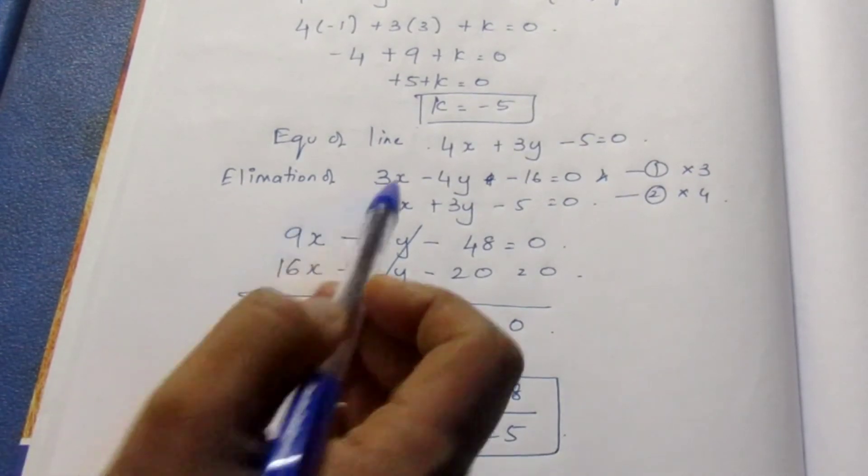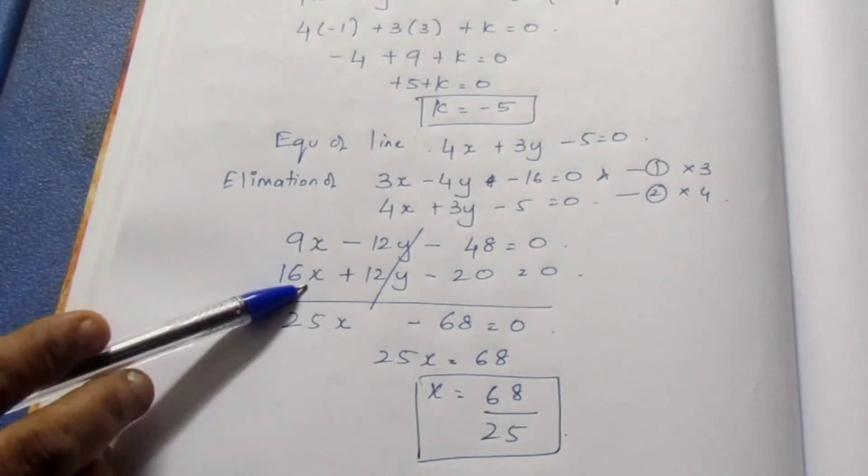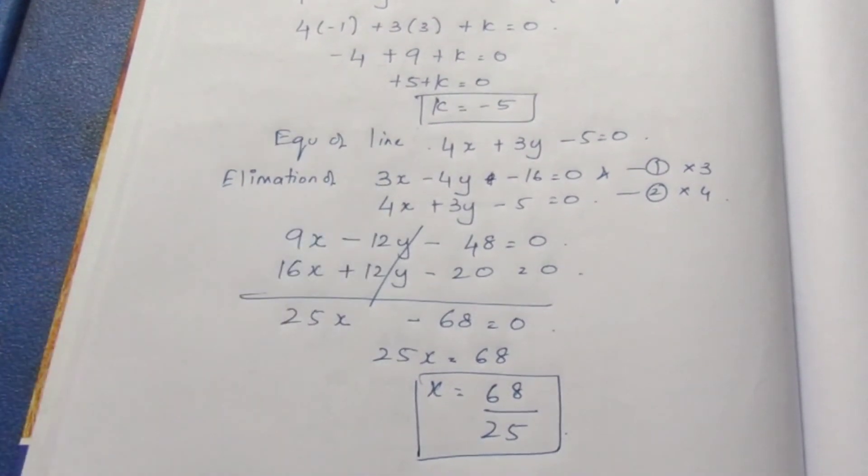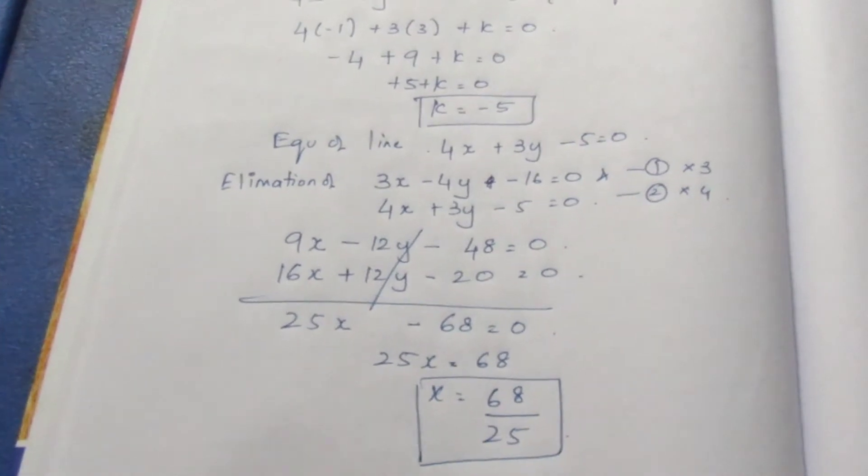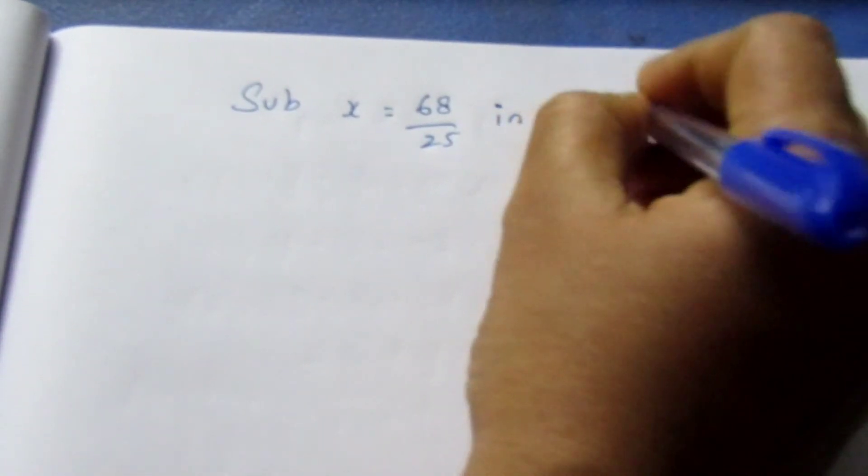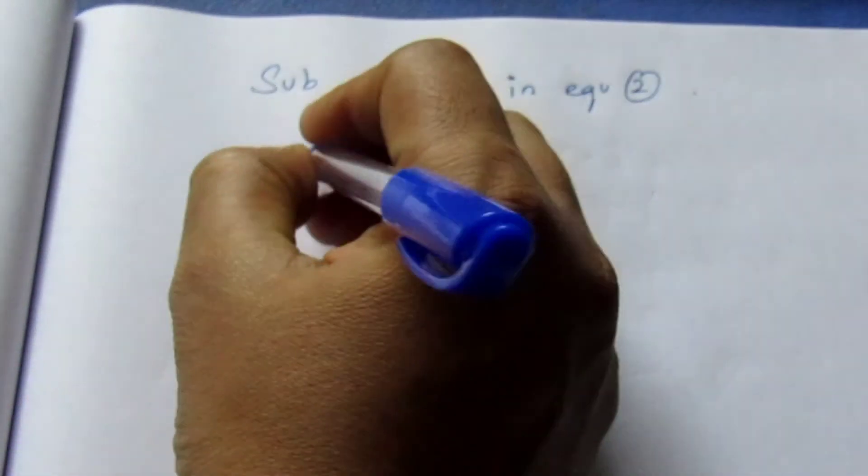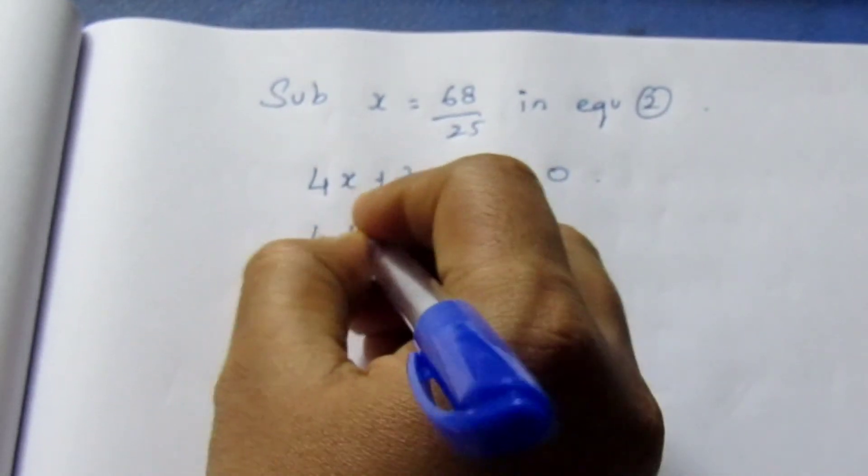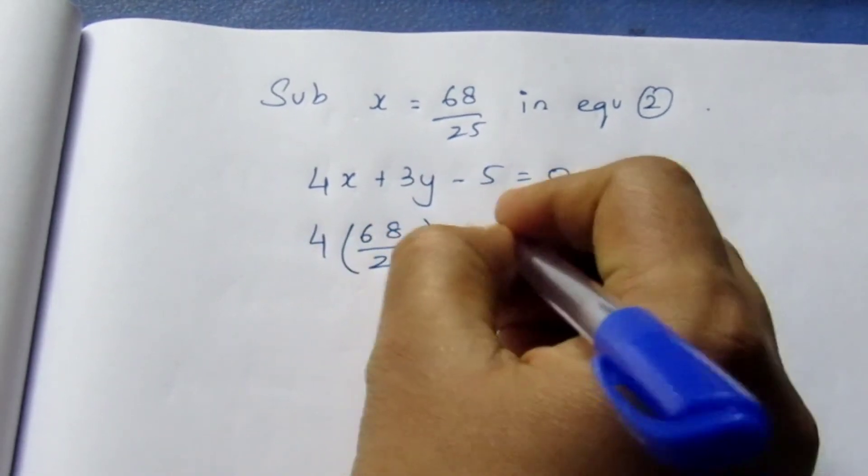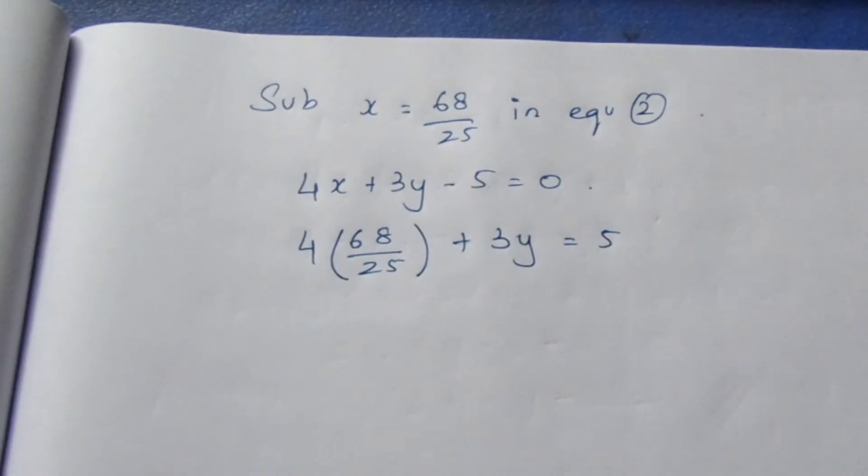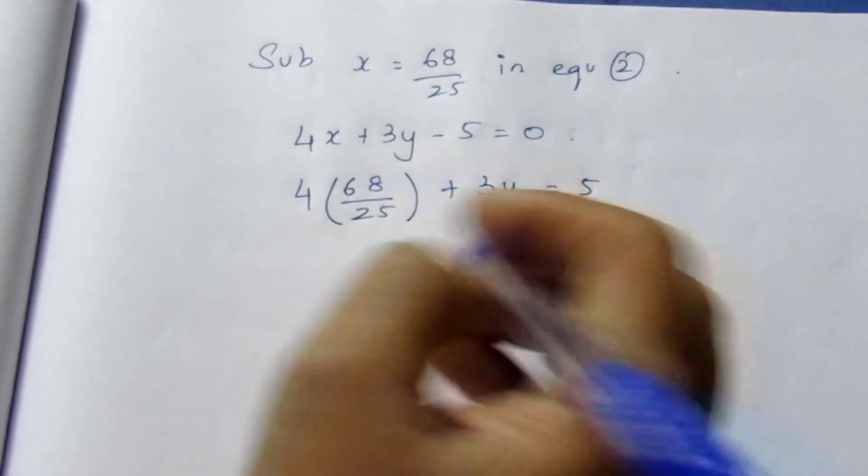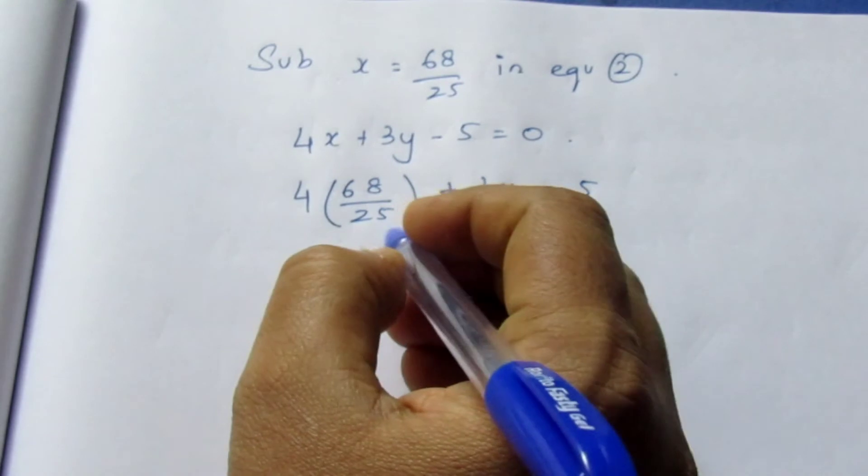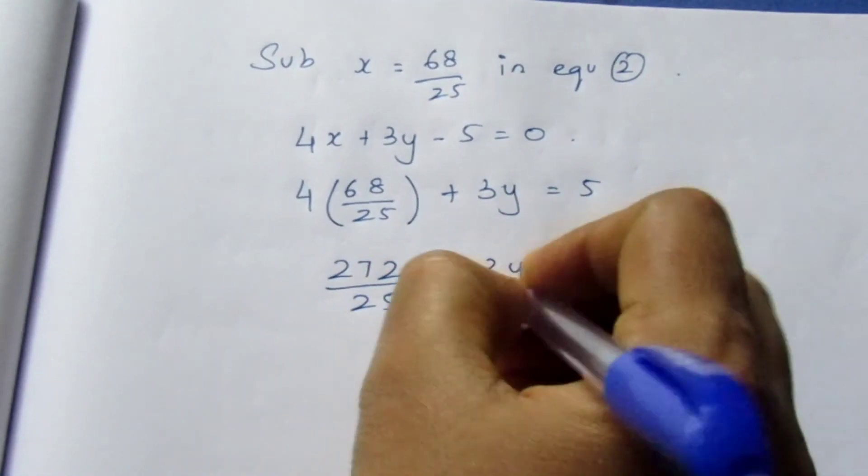Substituting x value in any of the equations. Always substitute in the equation which is very simple. Don't go with the multiplied equation. Substitute it here. You can substitute anywhere in an equation to find the value of y. So I am just substituting it in equation 2. Substitute x = 68/25 in equation 2. The equation 2 here is 4x + 3y - 5 = 0. Instead of x, if I substitute 4(68/25) + 3y = 5. I am taking this to this side, the constant term to the other side. Here it becomes, we can't cancel, so just multiply. 272/25 plus 3y equal to 5.